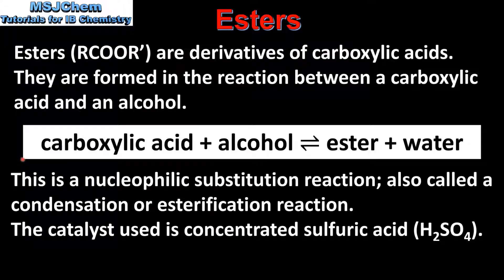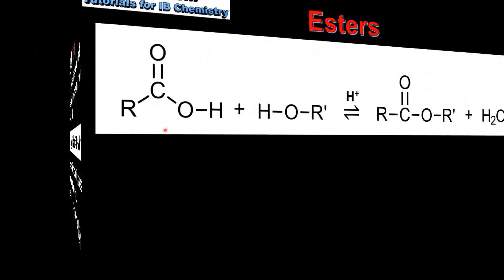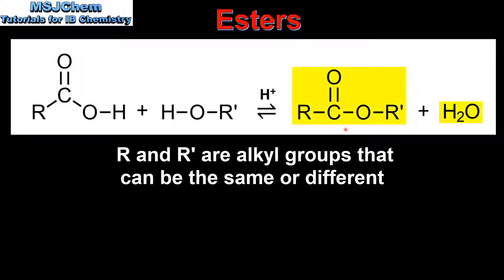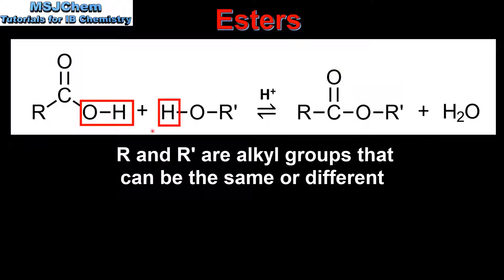Starting with the reactants, we have a carboxylic acid with a carboxyl functional group and an alcohol with a hydroxyl functional group. The reaction occurs in the presence of a strong acid catalyst. The products are an ester and a molecule of water. In the reaction, the OH from the carboxyl group combines with the hydrogen from the hydroxyl group to form a molecule of water.